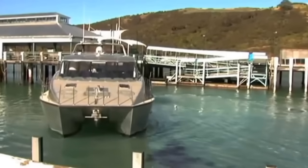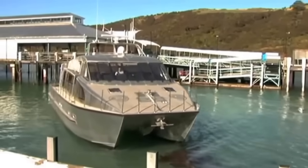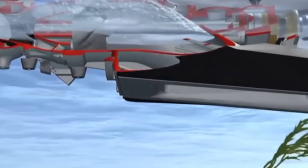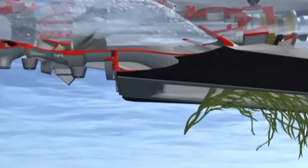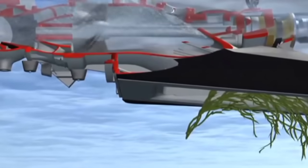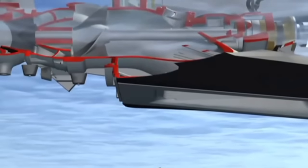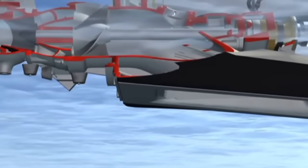Symptoms of a blocked waterjet intake include an increase in engine revs, loss of thrust, and extra noise and vibration from the jet unit. The simplest way to clear the blockage is to turn the affected engine off and wait for the blockage to float clear before restarting. This is best done while the vessel has some headway.